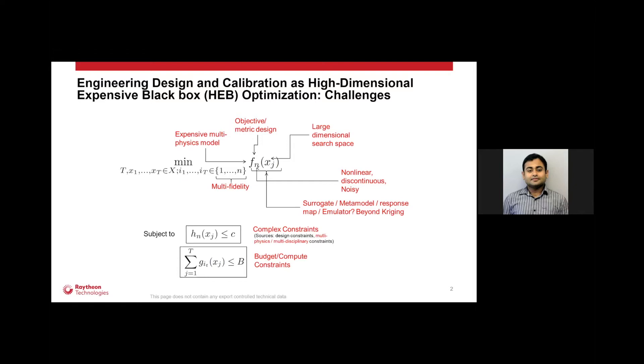Mathematically, we can think of it as a high dimensional expensive black box optimization problem. If we have a large dimensional space, maybe design variable or tuning parameters for a simulator X, and the performance or output that we care about, the objective or the metric, that is function F. And we have different sources from different disciplines, the expensive multiphysics models which can be nonlinear, discontinuous, and noisy.